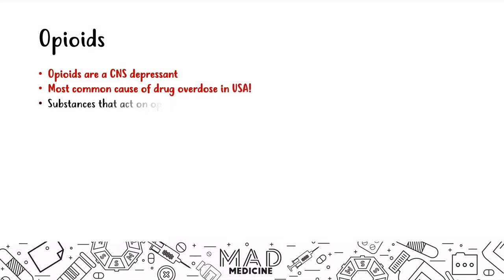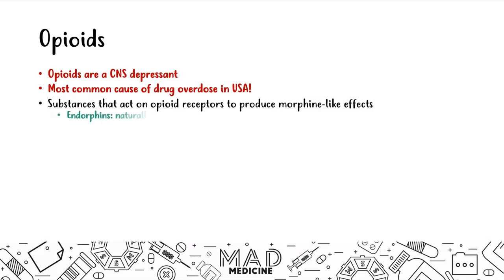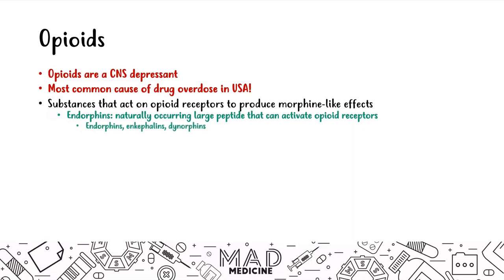Opioids act on opioid receptors to produce morphine-like effects, and they act very similar to endorphins, which are naturally occurring large peptides that activate these opioid receptors. Endorphins, enkephalins, and dynorphins all activate opioid receptors. These receptors are found on both central and peripheral neurons, and we're going to talk about the side effects of activating both.